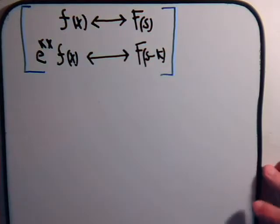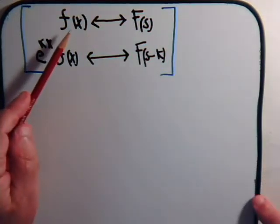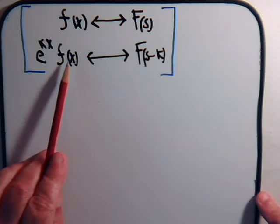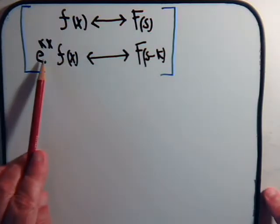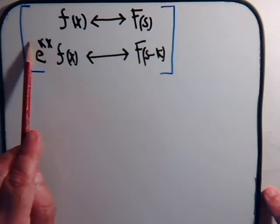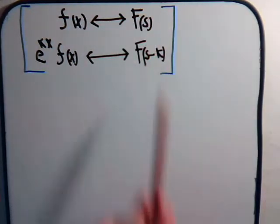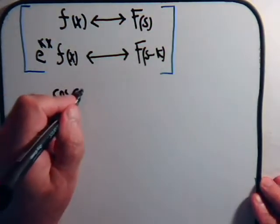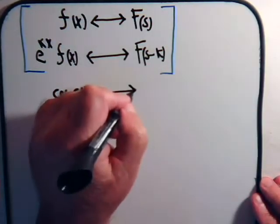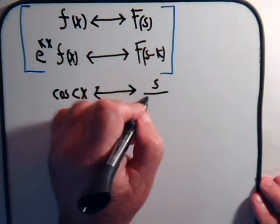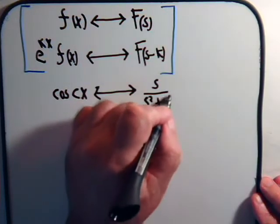To begin with, we're saying if we have some function f of x, and we know what its corresponding Laplace transform is, then if we multiply that function by this exponential function, the Laplace transform of this product is f of s minus k. For example, the cosine of a constant c times x — the Laplace transform of that is s divided by s squared plus c squared.